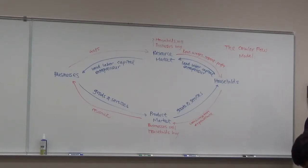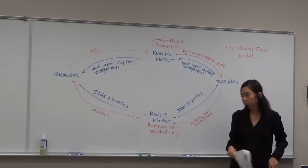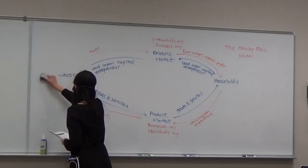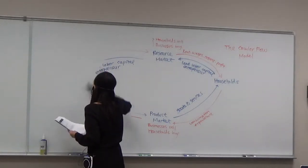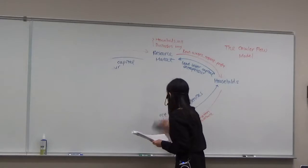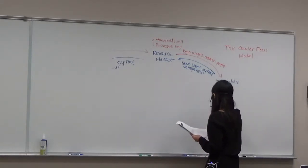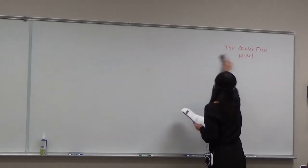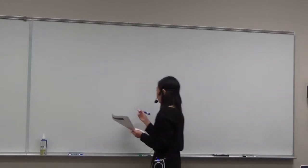We're going to move on to Chapter 3: demand, supply, and market equilibrium. We're going to learn how the market works. So what is a market? A market is just a group of buyers and sellers who interact to discover the price. Very simple. A group of buyers and sellers.